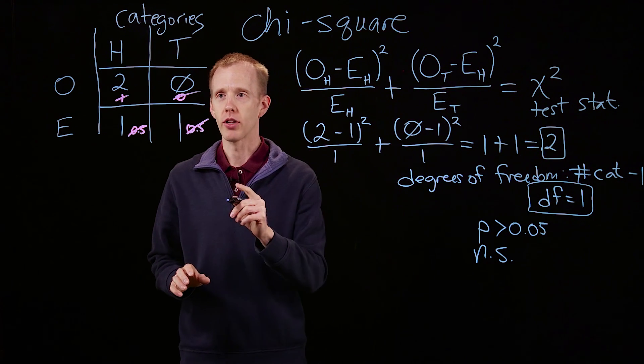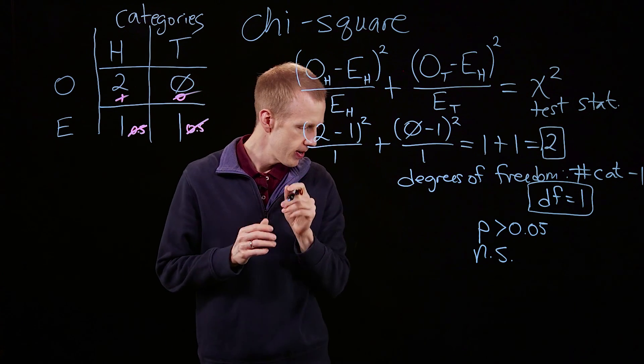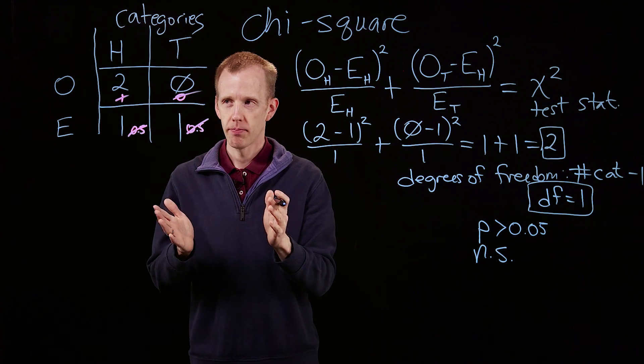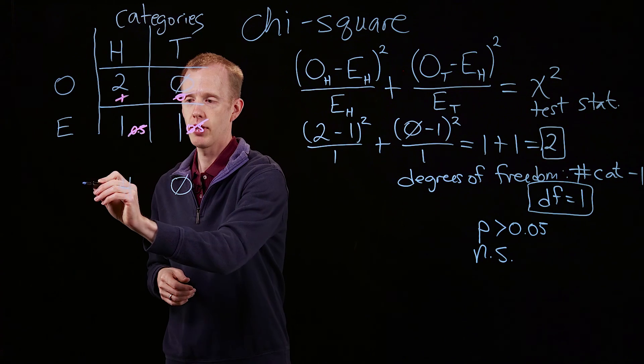So here's the next question. Let's say we kept flipping that coin, and we flipped it four times. And we saw four heads and zero tails.